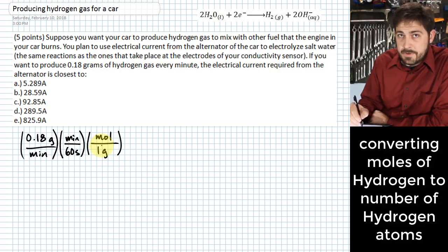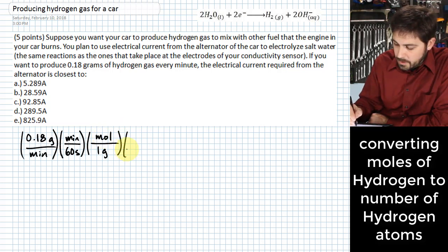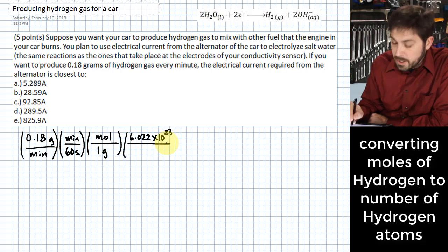That's a piece of information that you can look up off of a periodic table. The next piece of information is to go from moles to an actual number of these hydrogen atoms. So we would have 6.022 times 10 to the 23rd. That is Avogadro's number. And so that's how we go from moles to an actual number. And that's in one mole.